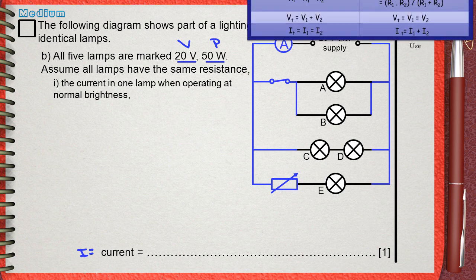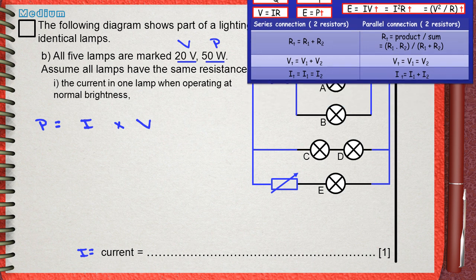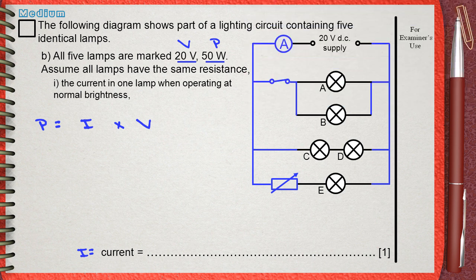In this case, we need to remember the 16 rules of electric current and electric circuits so we will use the most suitable equation among them. I think P equals IV is the most suitable one. But since we are asked about the current, we need to make some modification to the equation. So I equals P divided by V.